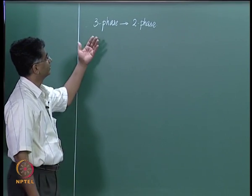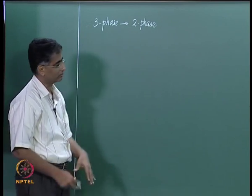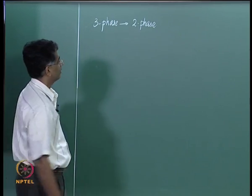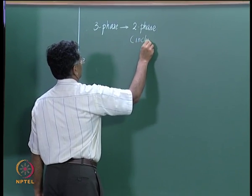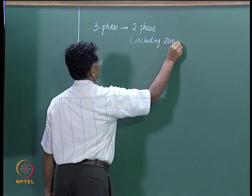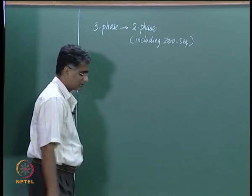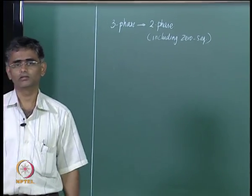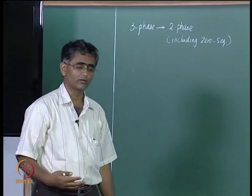We have seen the form of equations in the three-phase case and in the two-phase case. The two-phase description also includes the zero-sequence component, which as we said for the most part is not present in a three-phase machine if the system is operating normally.